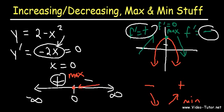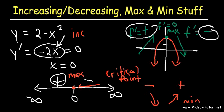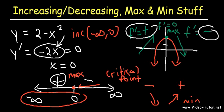0 is the critical point. Whenever the first derivative is positive, the function is increasing — so it's increasing between negative infinity and 0. The function is decreasing when the first derivative is negative, so it's decreasing from 0 to infinity.